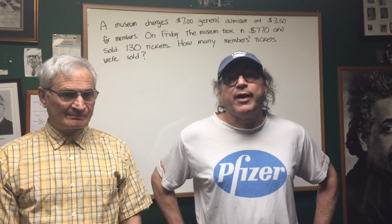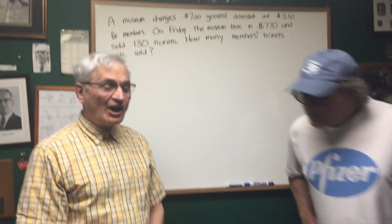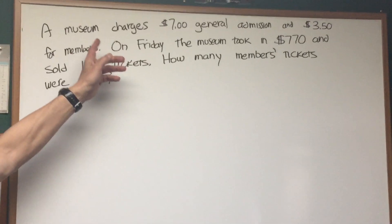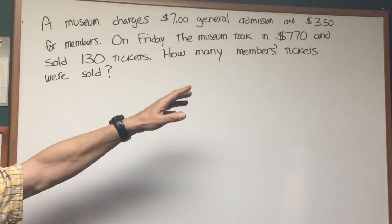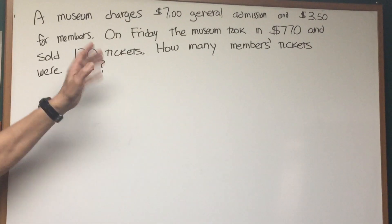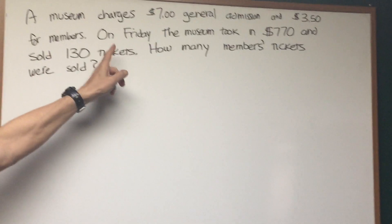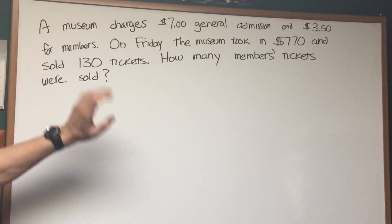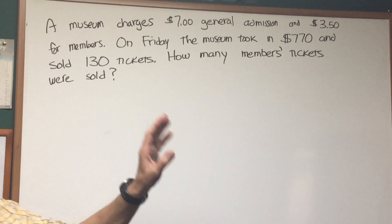This is a very important DAT type of calculation. All right, Professor, I'll leave this to you. Okay, Professor Blois here. Let's read this problem together. A museum charges $7 general admission and $3.50 for members. On Friday, the museum took in $770 and sold 130 tickets. How many members' tickets were sold?